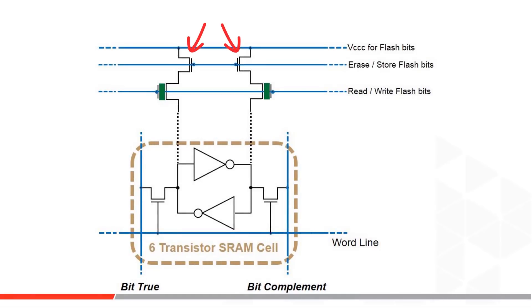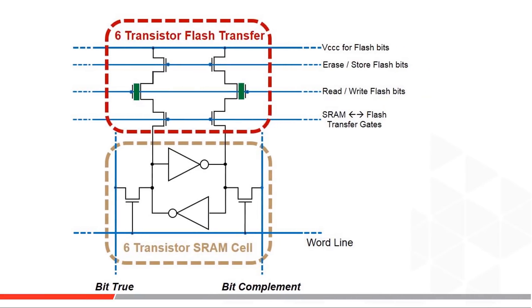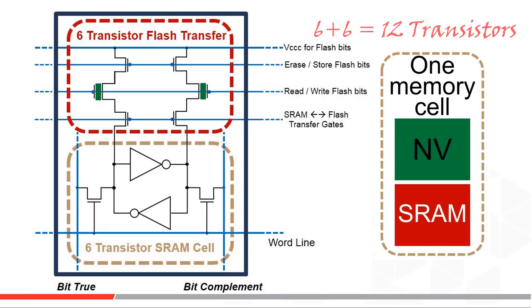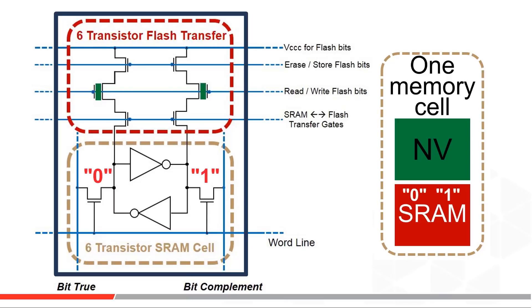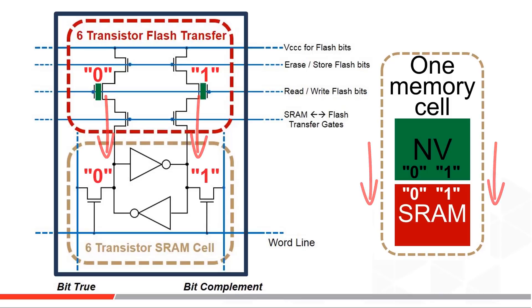Two more gates are added to help write or reset the floating gate transistors, and then two additional gates are added to transfer the logic level from the SRAM when power goes away, and then back to the SRAM when power comes back on. So EERAM has a memory cell with 12 transistors — quite a few, making it more than twice the size of an SRAM. By putting the floating gates right inside each memory cell, on any power disruption the SRAM content can be quickly transferred to these non-volatile transistors, and when power returns to the IC the information is transferred back to the SRAM and to the user.